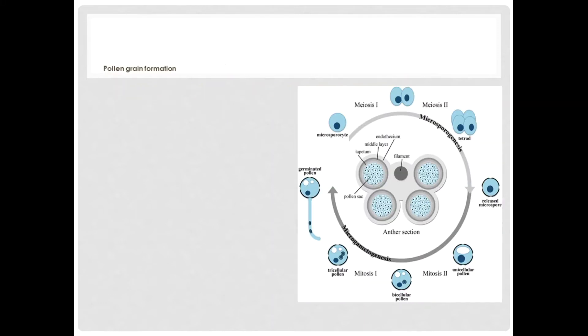Now let's take a look at how a pollen grain is formed. Pollen grain formation occurs in the anthers of flowering plants.